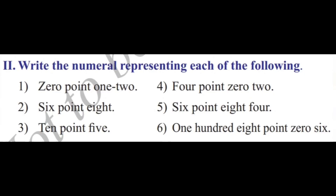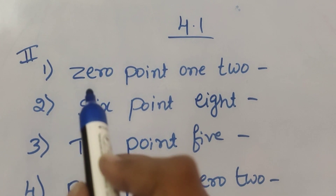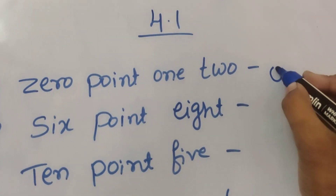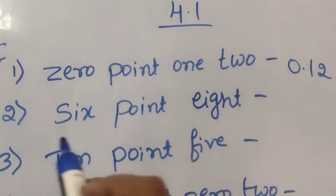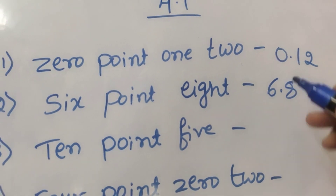Second section: Write the numeral representing each of the following — convert the given words into numbers. First question: write 0.12 as a numeral. Second one: six point eight — 6.8.